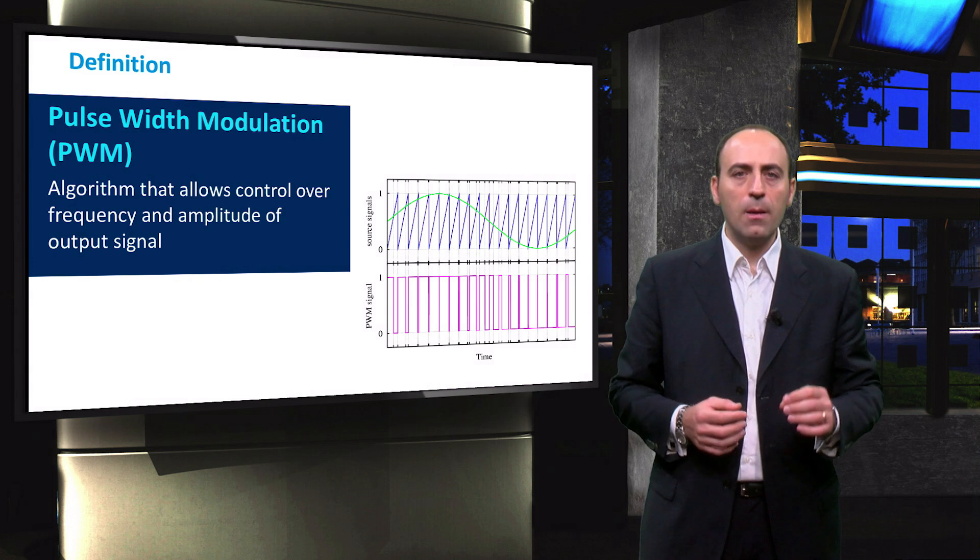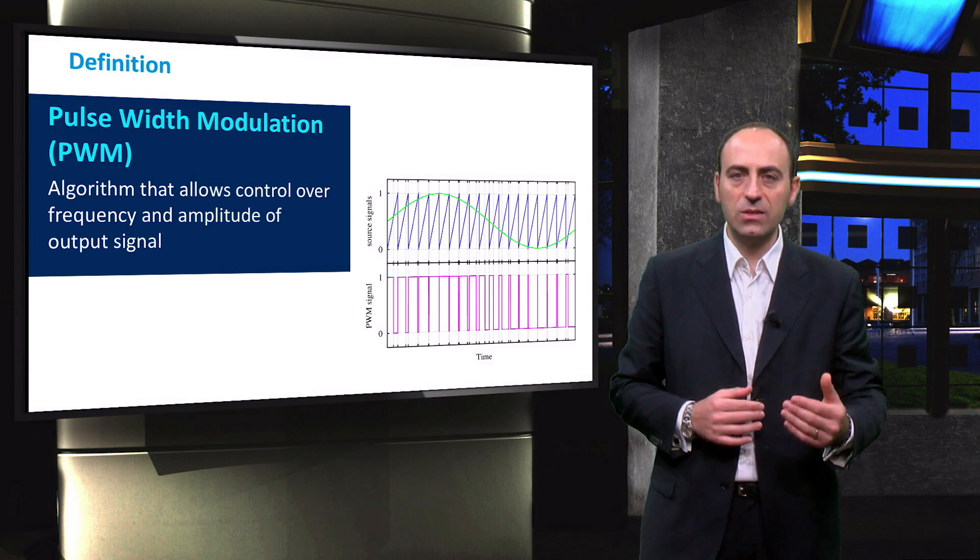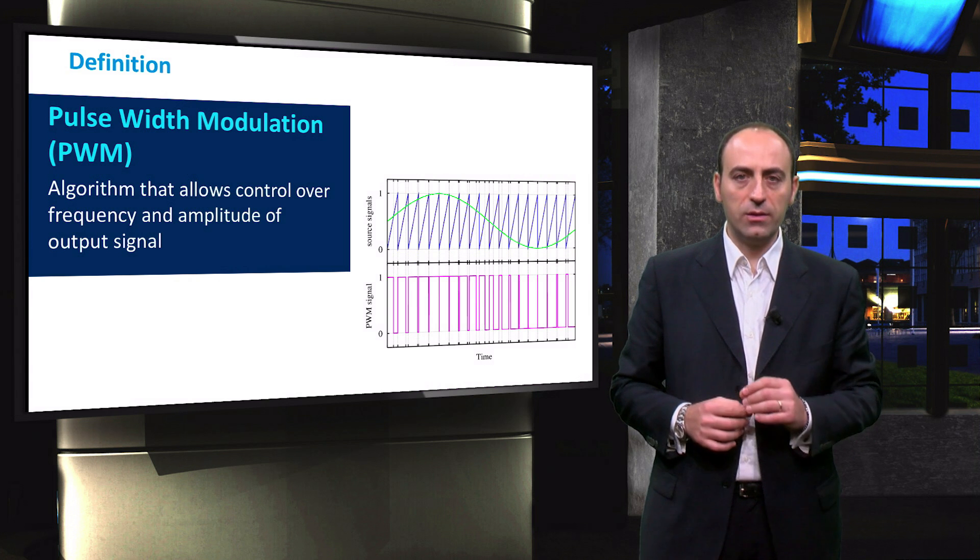This technique basically enables the inverter to output a periodic signal towards the AC side of the PV system once opportunistically filtered out.